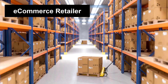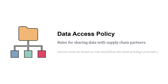For an e-commerce retailer, they might have a data access policy — rules for sharing data with supply chain partners. It says that access must be based on role, must reflect a need, and follow the least privilege principle: we only give access to what's needed and provide the least privileges required.